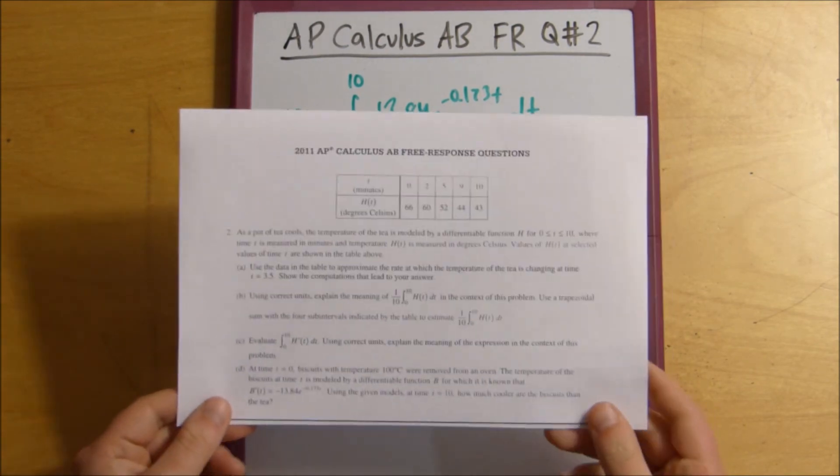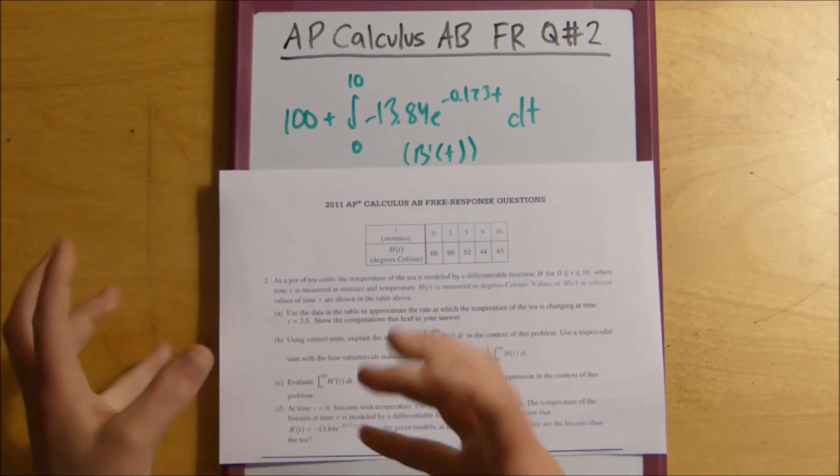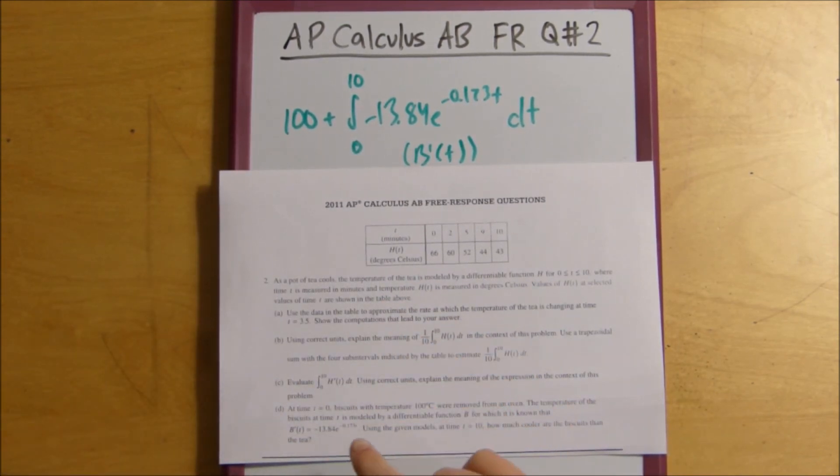So, the real trick to these problems is this whole idea of the fundamental theorem of calculus, where the integral of h prime of t is the same thing as h of 10 minus h of 0. Just kind of this little tricky way to solve these problems. And, yeah, that's basically how you solve them.